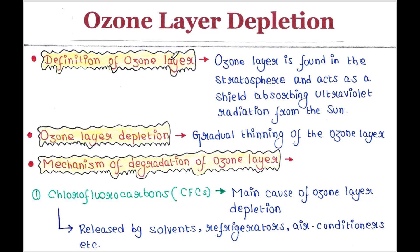So what is ozone layer? The ozone layer is found in the stratosphere and acts as a shield absorbing ultraviolet radiation from the sun.